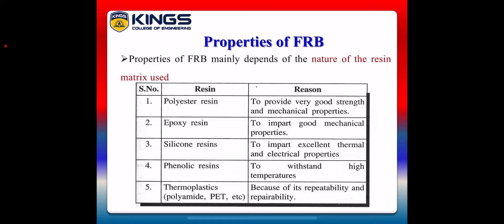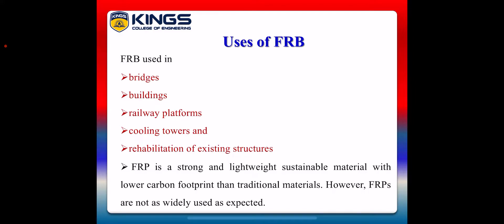The properties change based on the matrix used in the FRP. Next, we see about uses of FRP. FRP is generally used in construction of bridges and buildings, laying of railway platforms, cooling towers, and rehabilitation of existing structures. FRP is a strong and lightweight sustainable material with a lower carbon footprint than traditional materials. However, FRPs are not as widely used as expected.